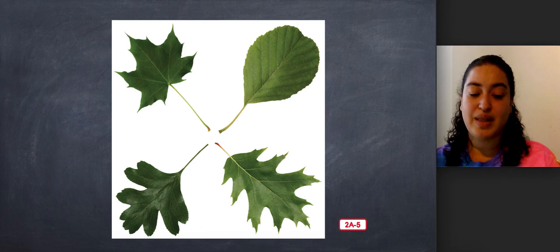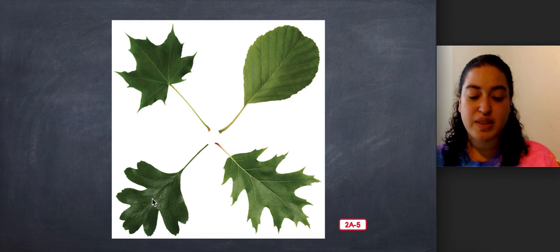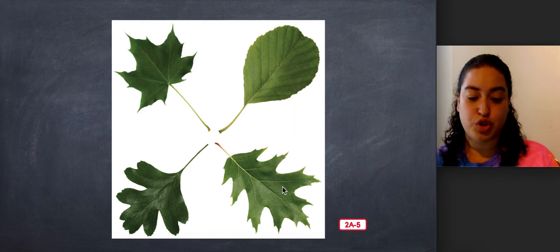The leaf on the top left is from a sugar maple tree. So this is a sugar maple tree leaf. The leaf below that is from a white oak tree. The leaf on the top right is from a witch hazel tree. And the leaf below that is from a black oak tree.